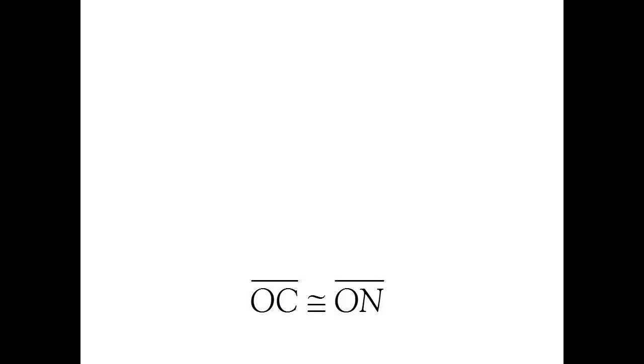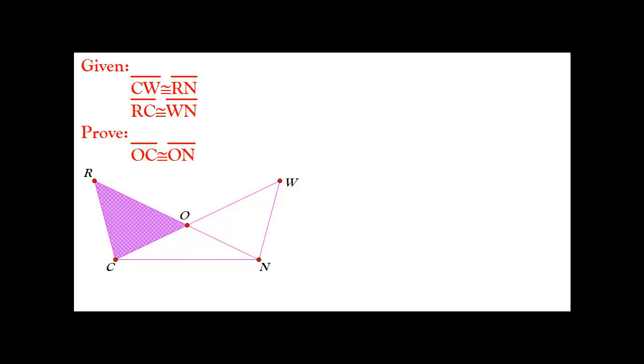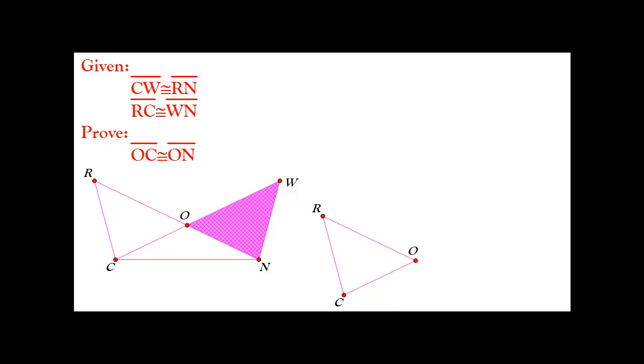So what would lead us to that particular conclusion? What would be true if those two segments were congruent? Well, one thing that would happen would be that triangle ROC would be congruent to triangle WON. So maybe this might be the route that we're going to need to take. So what does happen if we examine those two triangles? First, we have triangle ROC. I'm going to pull it over to the side. And then we have triangle WON, and I'm going to pull that to the side.